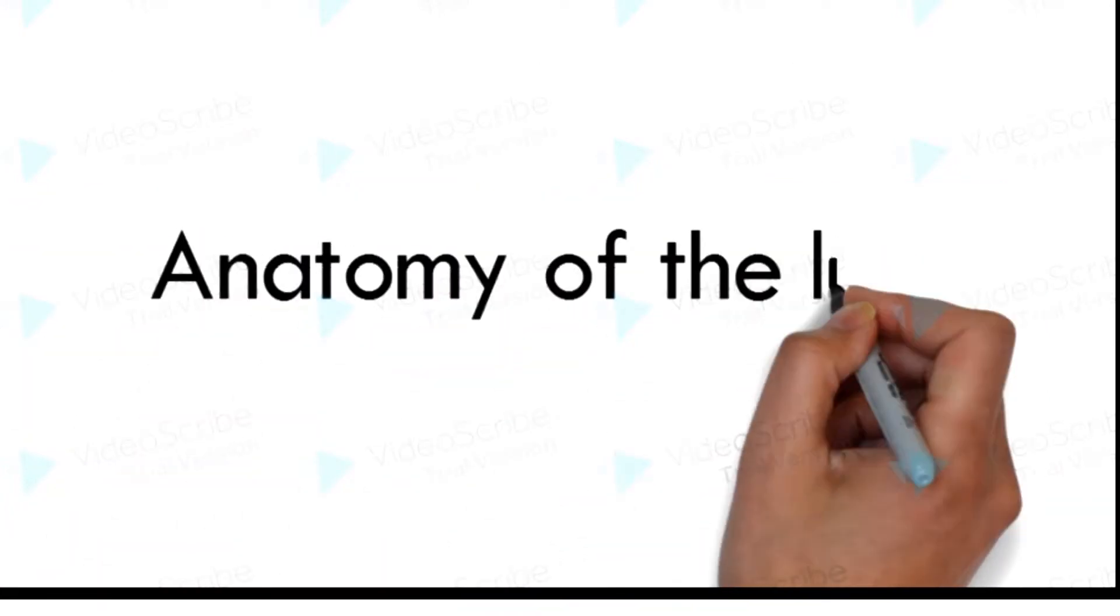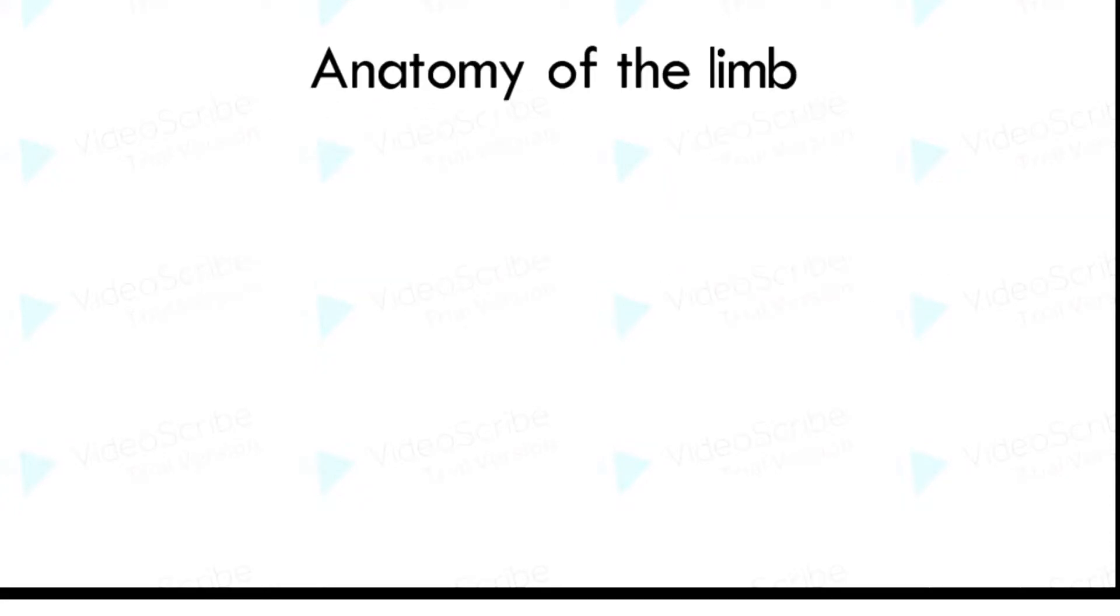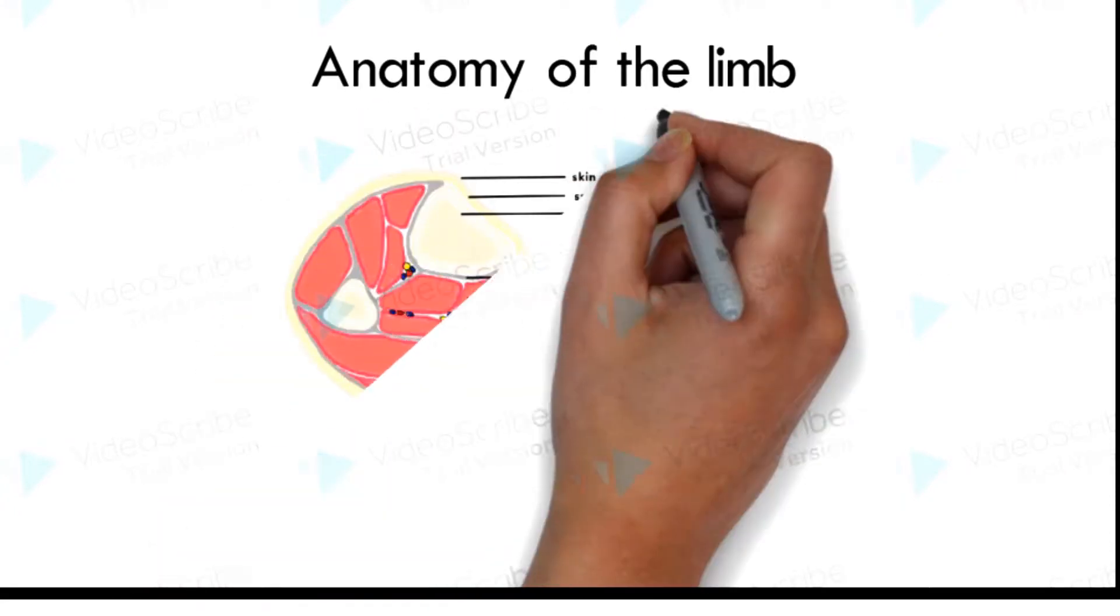We'll start by looking at the anatomy of the limbs. The muscle groups of the limbs are divided into compartments which are ensheathed in fascial membranes. The fascial membrane is strong and unyielding, creating a fixed space in which the muscle resides.